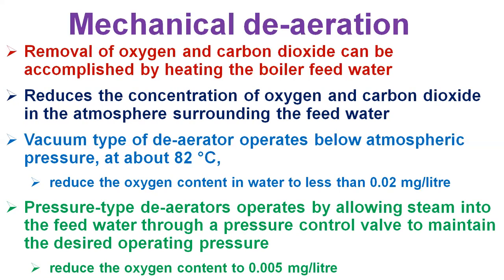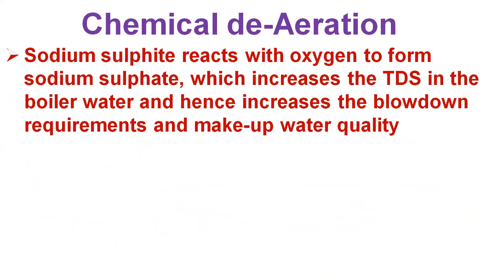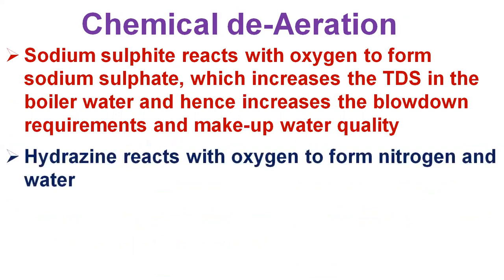Vacuum pumps or steam ejectors are required to maintain the vacuum. The pressure type deaerators operate by allowing steam into the feed water through a pressure control valve to maintain the desired operating pressure and temperature at a minimum of 105°C. The steam raises the water temperature, causing release of oxygen and carbon dioxide gases that are then vented from the system. This type can reduce oxygen content to 0.005 mg/L. Where excess low pressure steam is available, the operating pressure can be selected to make use of that steam and hence improve fuel economy.